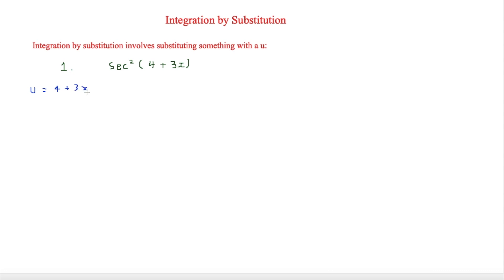So that means we are now integrating sec squared u. However this is still in terms of dx and what we need is to be in terms of du, because we're integrating in terms of u. In order to get du we're going to say du over dx is equal to 3, which means that dx is equal to du over 3. So instead of dx we can say this is in terms of du over 3.